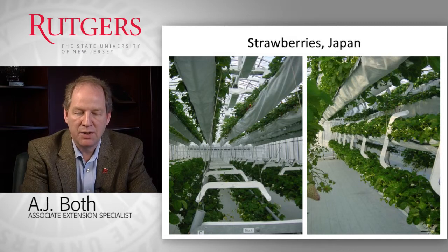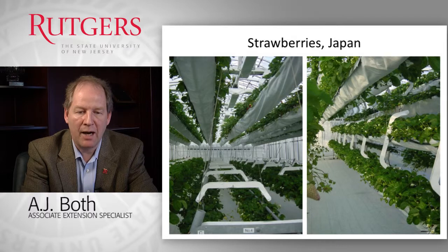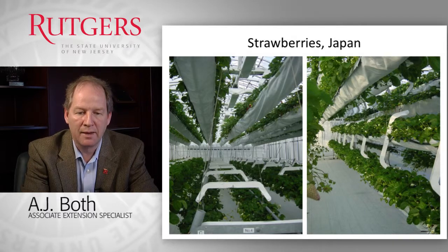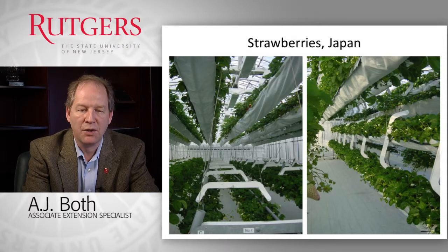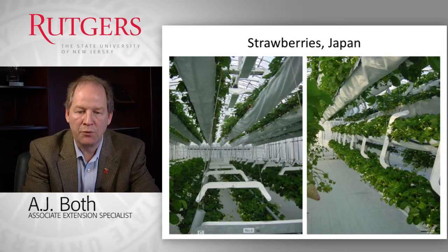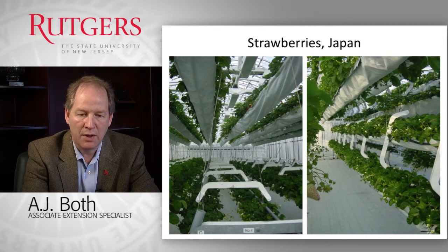Another example from Japan is this vertical system that grows strawberries in two layers. This example illustrates how this particular grower manages growing in two layers — the bottom layer could be tipped and moved to the top layer, so plants were continuously rotated from the top layer to the bottom layer so that each plant received equal amounts of light, ensuring equal growth rates for both layers.